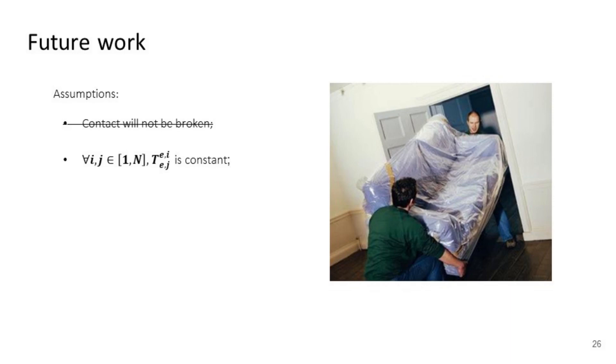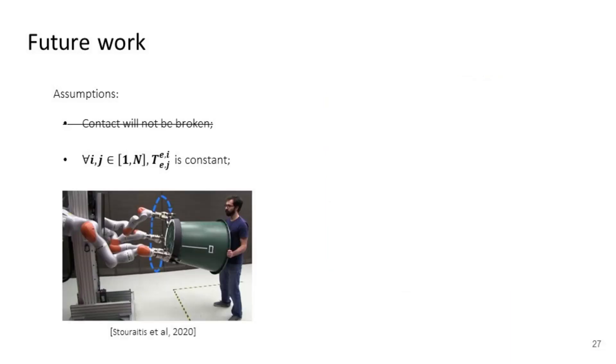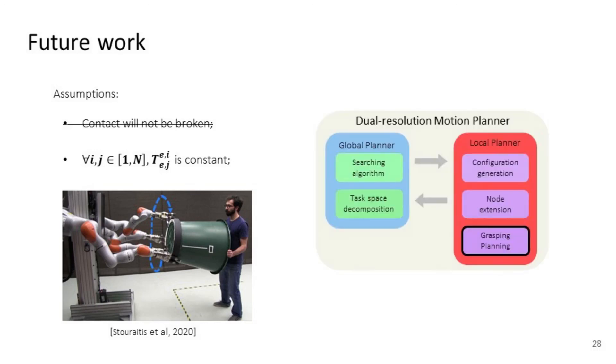Toward even more complicated collaborative loco-manipulation tasks, grasping during manipulation cannot be neglected. Therefore, in our future work, we would like to relax one assumption—contact can be broken—to enable a more general collaborative multi-robot loco-manipulation task. With inspiration from theoretical work on dexterous manipulation, we plan to achieve this by adding a grasping planner into the local planner.